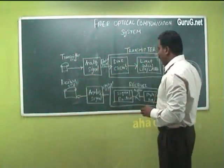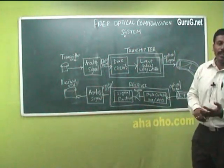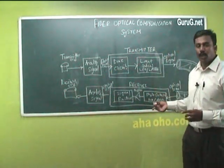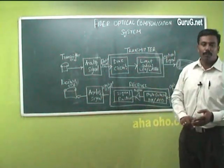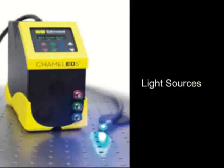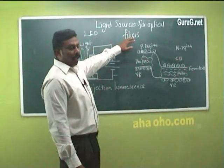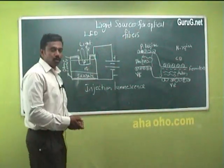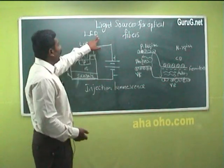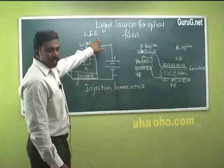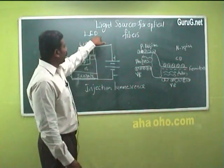This is how an optical fiber is used for communicating data from one point to another point. The most commonly used light sources in optical fibers are LEDs (light emitting diodes) and semiconductor lasers.